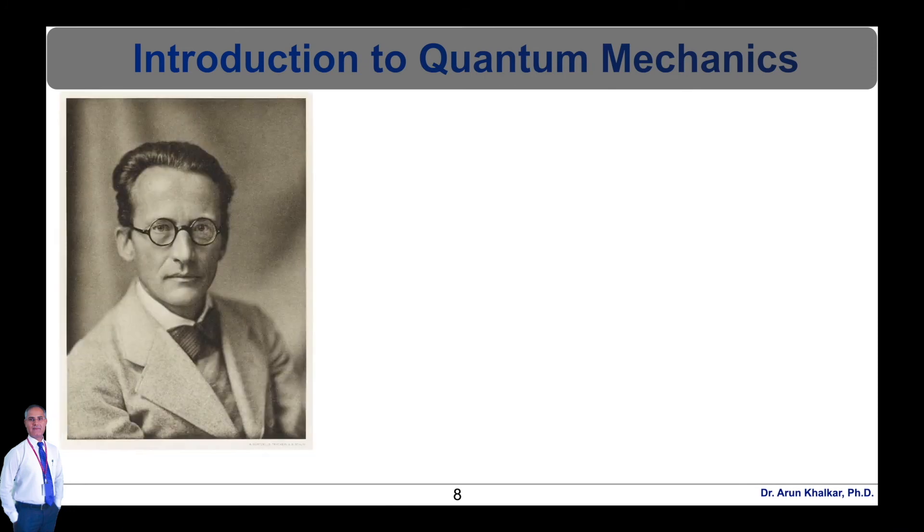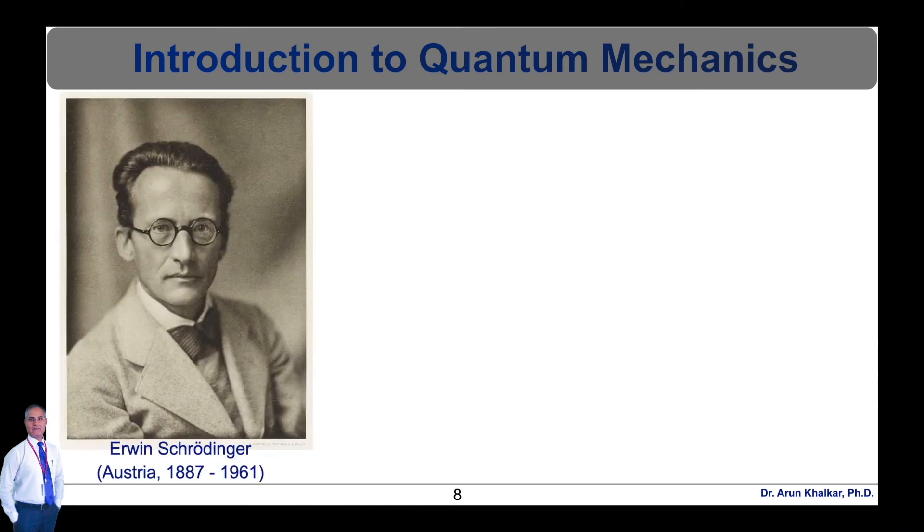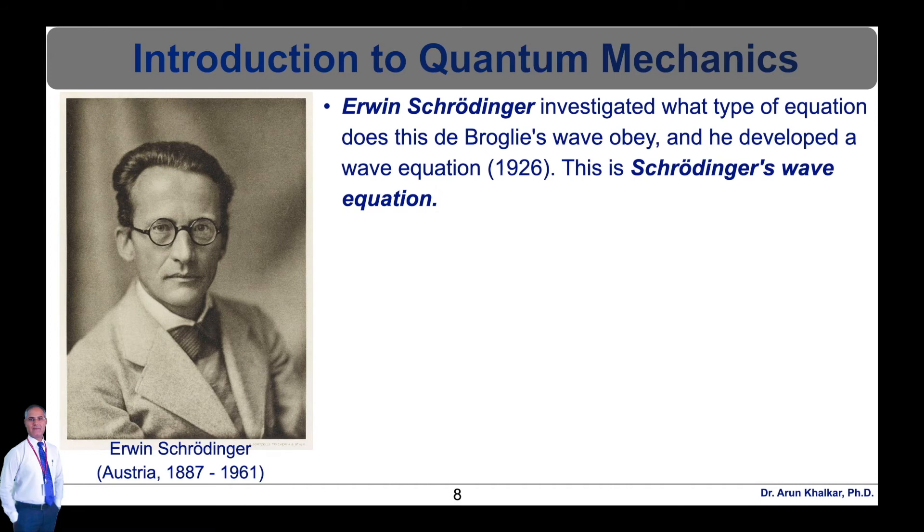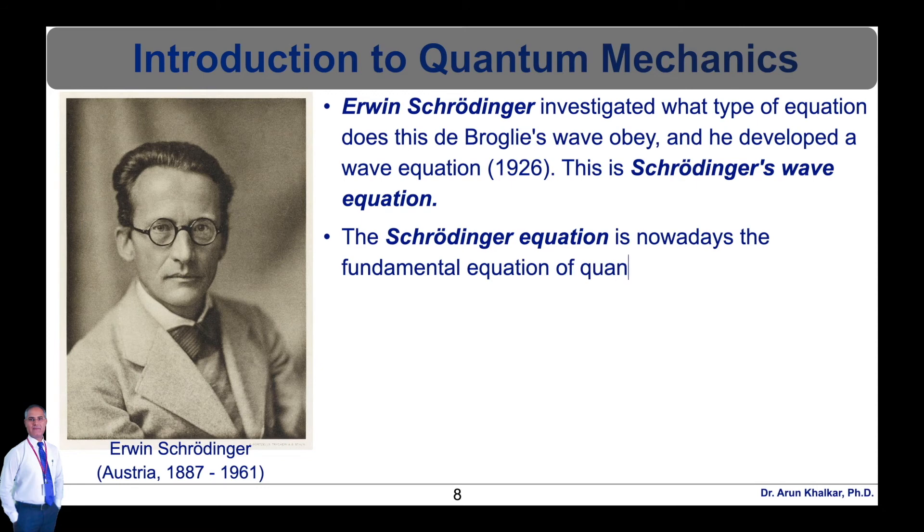Erwin Schrodinger was interested in de Broglie's matter wave. He investigated what type of equation this de Broglie's wave obeys and developed a wave equation in 1926. This is Schrodinger's wave equation. Today it is simply called the Schrodinger equation.